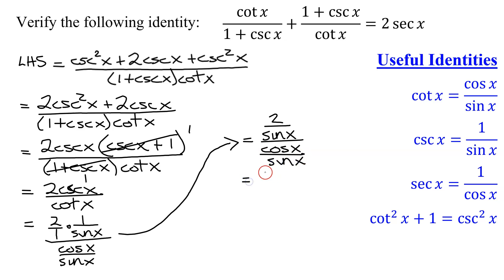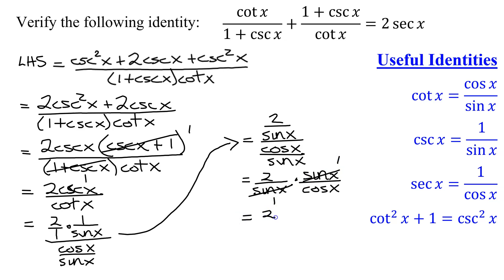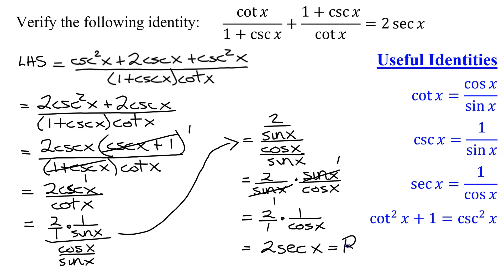Now dividing fractions: take the fraction in the numerator, 2 over sine of x, and multiply it by the reciprocal of the fraction in the denominator, which is sine of x over cosine of x. The sine of x terms cancel, giving 2 over 1 times 1 over cosine of x, which is 2 over cosine of x. And 1 over cosine of x is secant x, so I get 2 secant x, which equals the right-hand side. I have verified this identity.